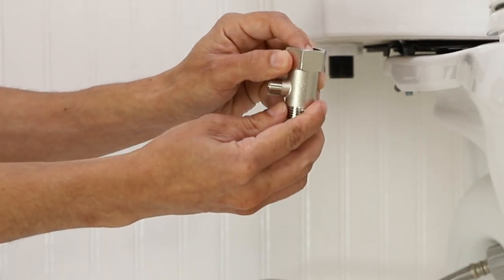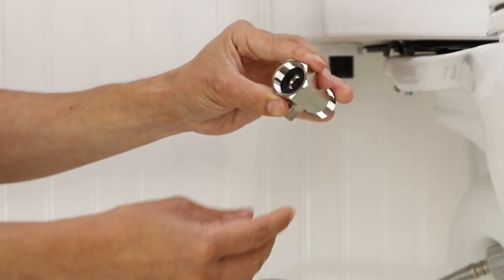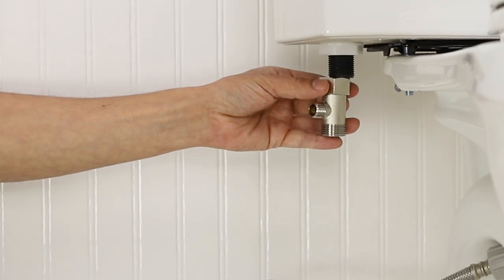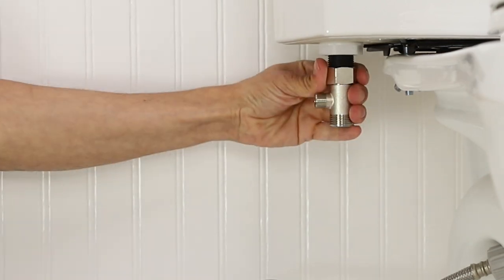Insert the black rubber washer into the provided T-valve and connect the T-valve to the fill valve under the toilet tank. Do not over tighten.